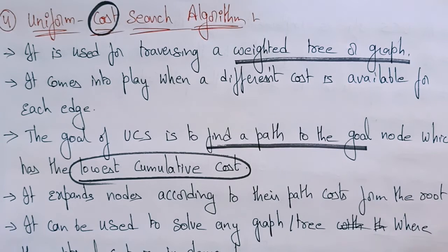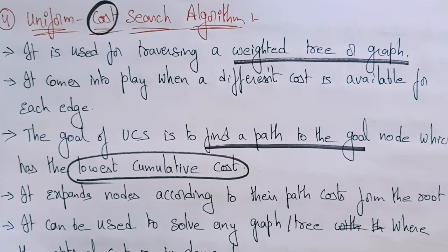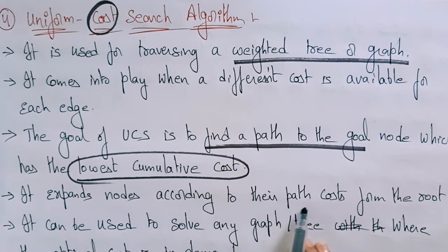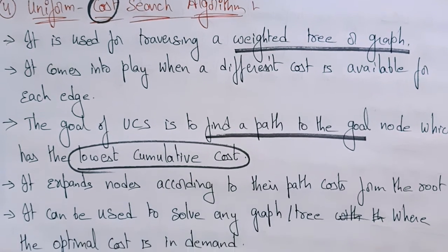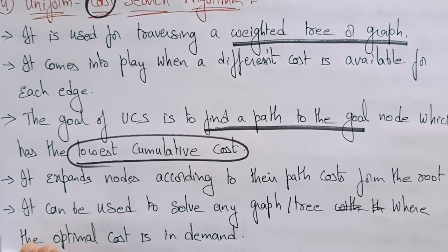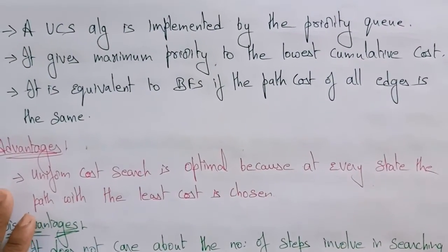The goal node is given, and we need to find the path to it which has the lowest cumulative cost. The path selected should be of the lowest cost. It expands nodes according to the path cost from the root node, and it can be used to solve any graph or tree where the optimal cost is in demand.